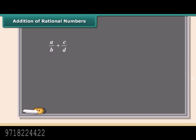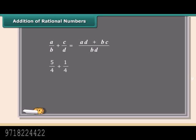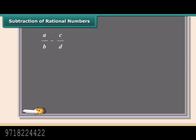How to add rational numbers? Before we add, keep in mind the rational numbers should have the same bottom number — that is, both rational numbers must have a common denominator. The easiest way to do this is to multiply both parts of each number by the bottom part of the other. Here is an example: we will add 5 by 4 and 1 by 4. The denominators are already the same, so add the numerators and put the answer over the same denominator.